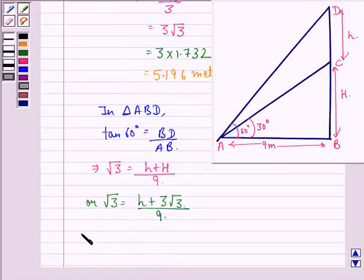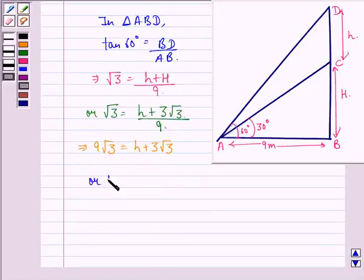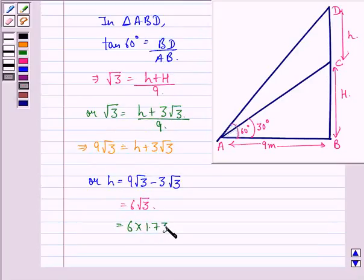This implies 9√3 = h + 3√3, or h = 9√3 - 3√3. This is equal to 6√3, which is further equal to 6 × 1.732, and that equals 10.392 meters.